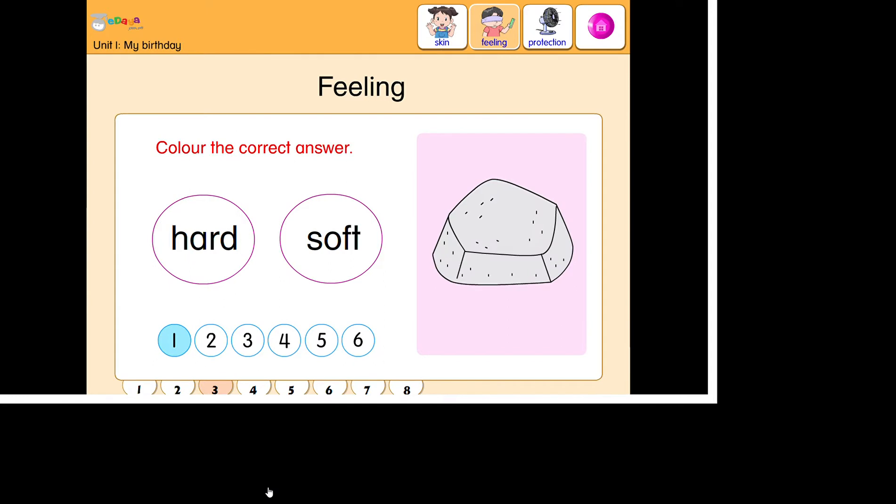Color the correct answer. This is cotton. Cotton is soft. This is a padlock. Padlock is hard.